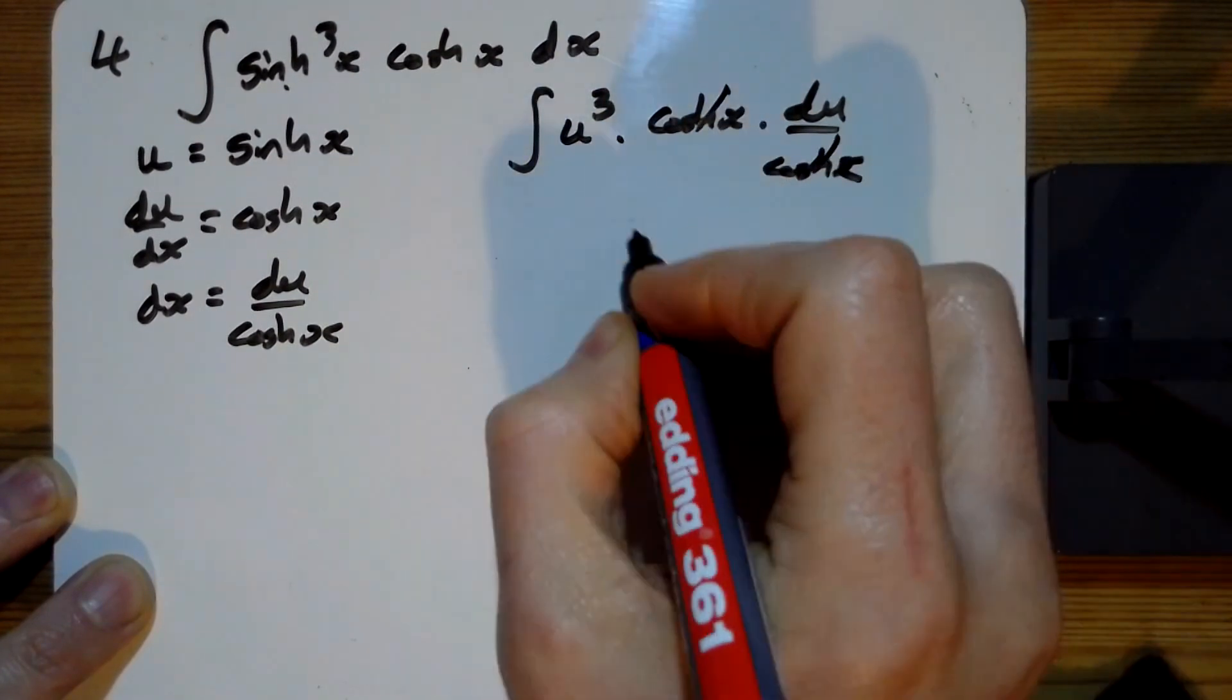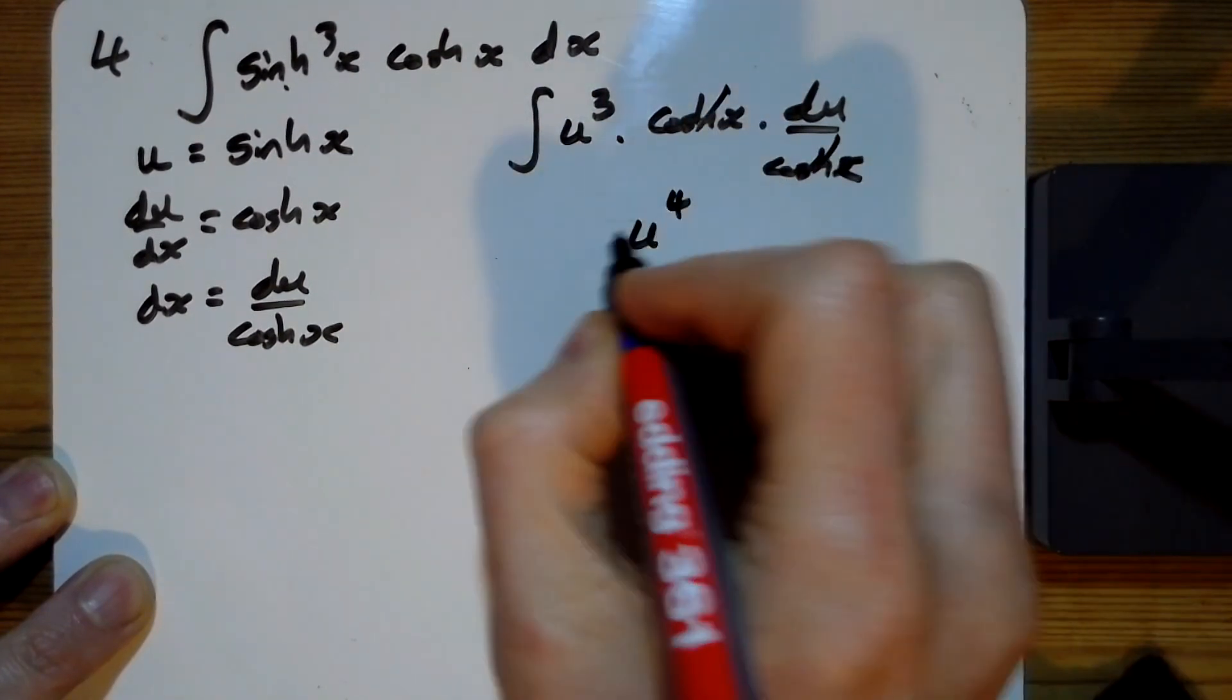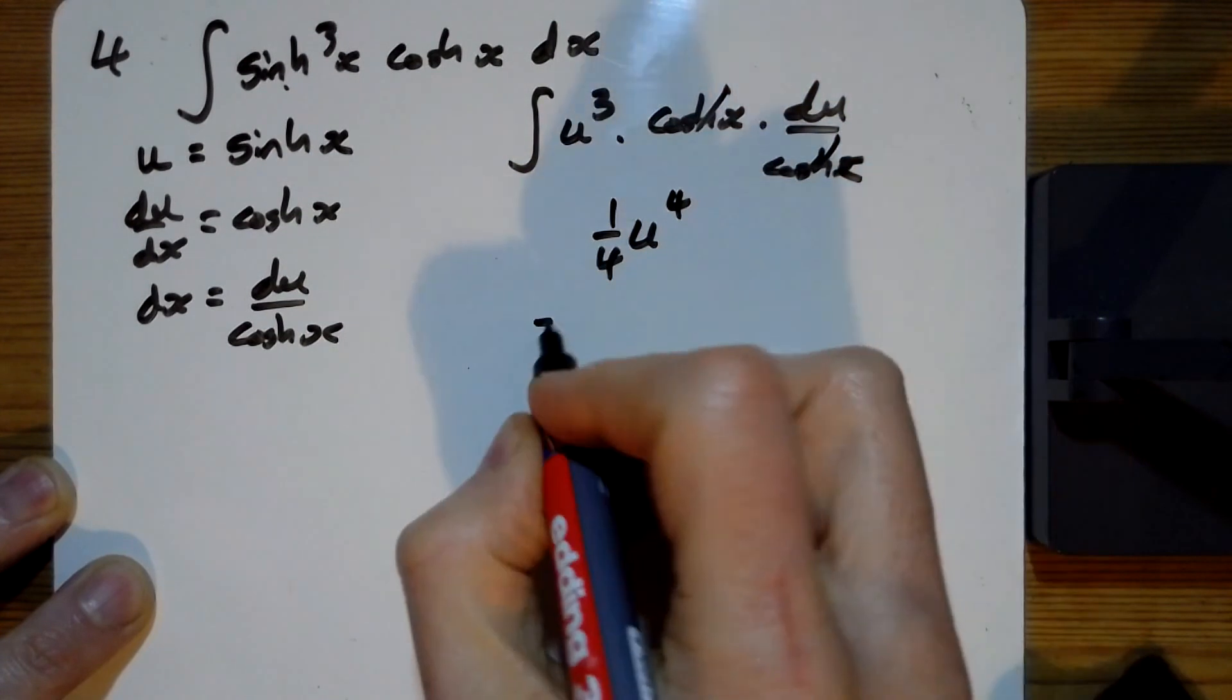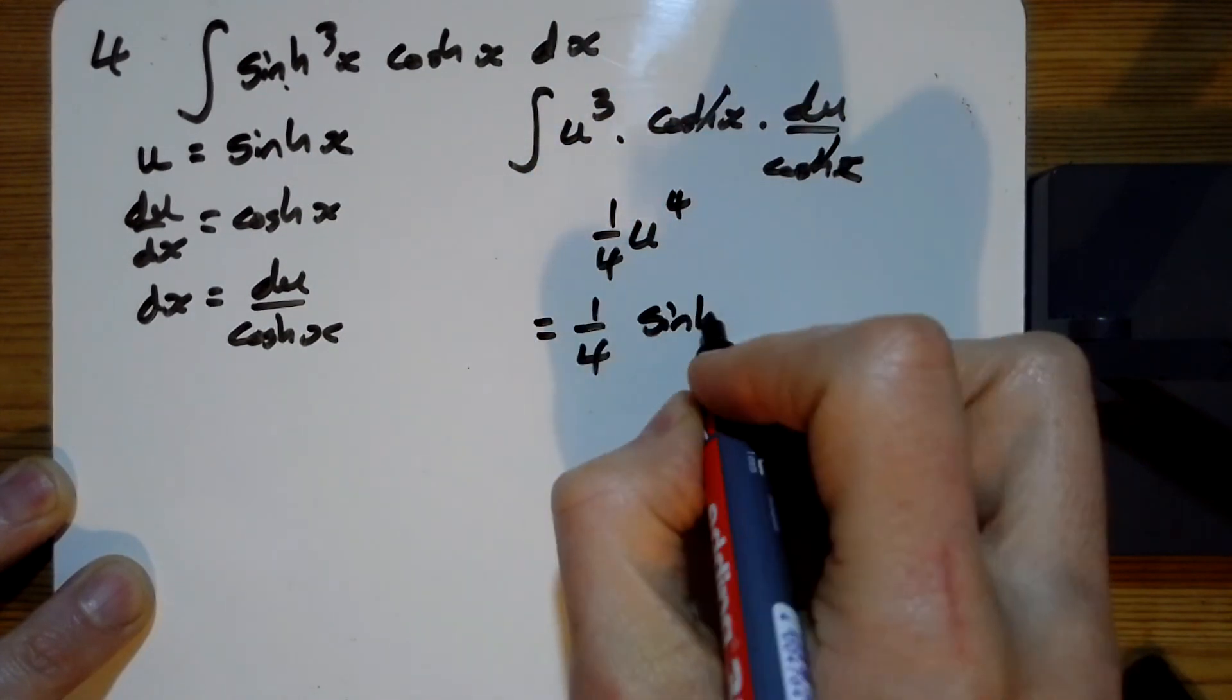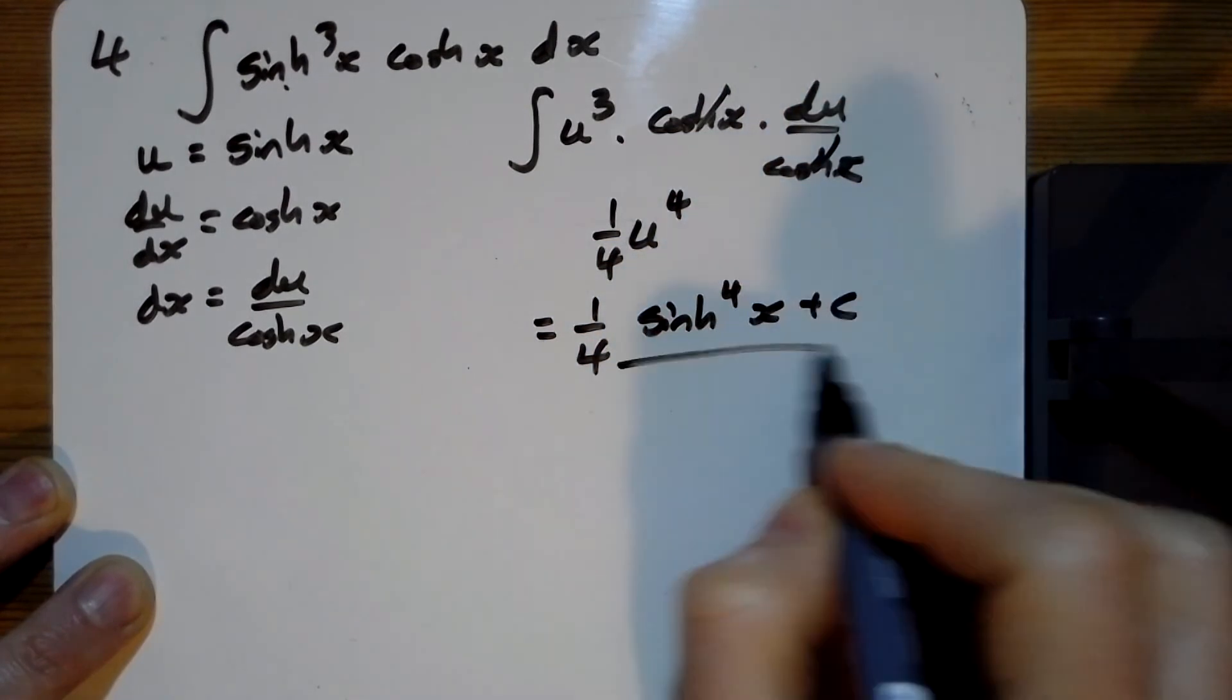The two cosh x's cancel, and so we're just having u to the four over four. The answer, one quarter sinh to the four x plus c.